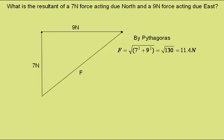But don't forget that F is also a vector, and so we must specify a direction. We could draw on the diagram here the angle theta, and then tan theta equals opposite over adjacent, which is 9N over 7N. This gives theta of 52.1 degrees.